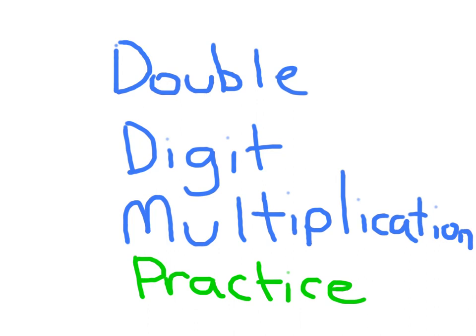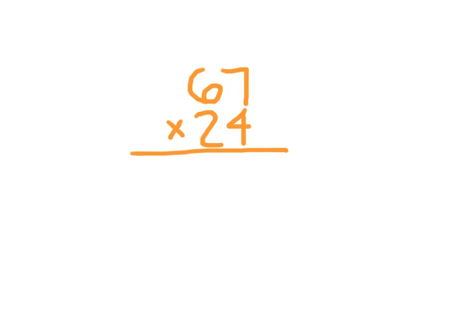Double Digit Multiplication Practice. Our first problem is 67 times 24. First we need to figure out 67 times 4.